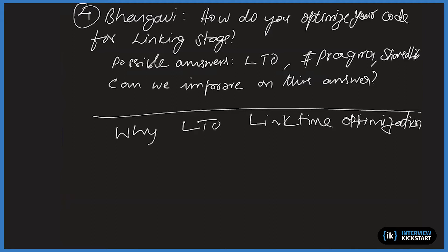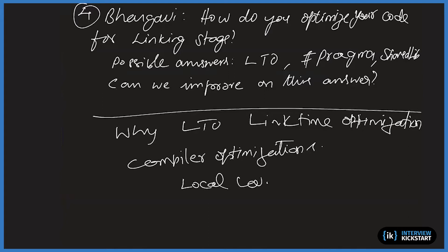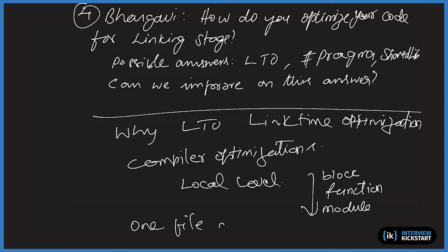You would have seen the foundational video on compiler optimizations. The compiler can do a lot of optimization at compile time. Compilers generally work at a very local level — the smallest unit may be a block within a function, then a function, then functions across a module. A module is one source file — technically called a compilation unit — one dot-c file. So it operates one file at a time.